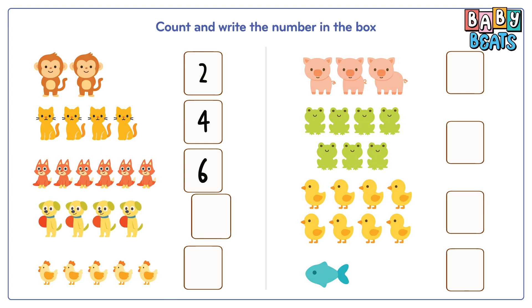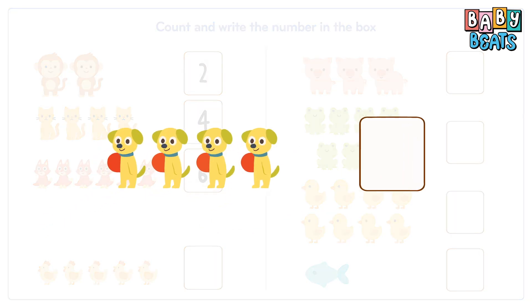Next, the dogs. Count carefully. One, two, three, four. That's four dogs. Write number four.